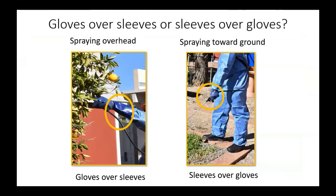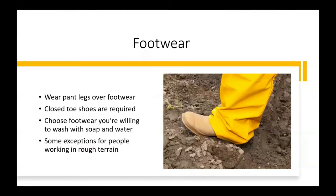A common question is whether to wear gloves over shirt sleeves or sleeves over gloves. Think of how any pesticide liquid might trickle down your glove when spraying overhead — you want the glove on the outside so pesticide ends up outside your sleeve and doesn't flow inside and contaminate your arm. When spraying toward the ground, you can pull your sleeve out over your glove. Similarly, wear your pant leg over your boot, which prevents pesticides from entering boots, contaminating socks, and eventually your skin.